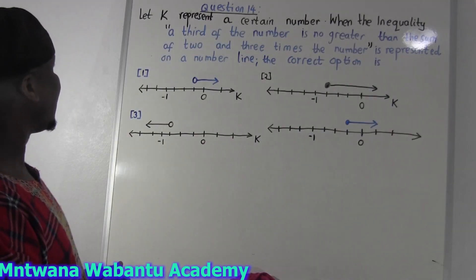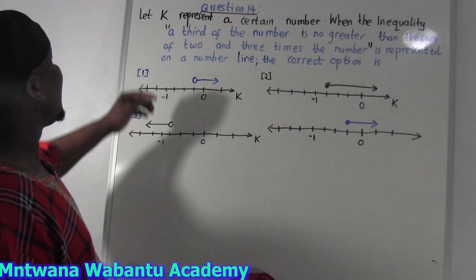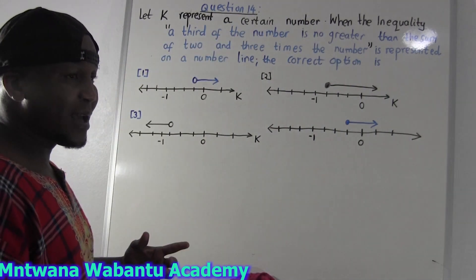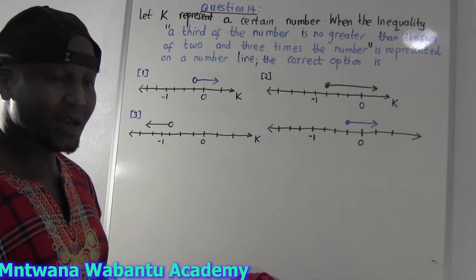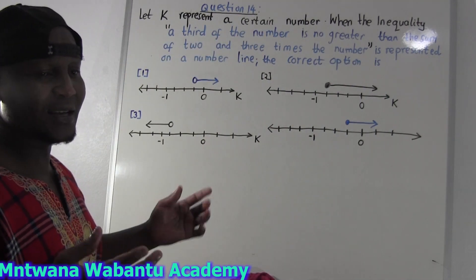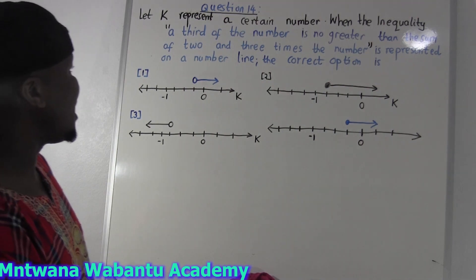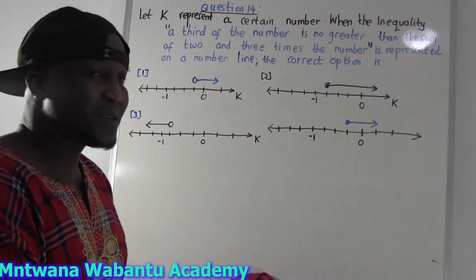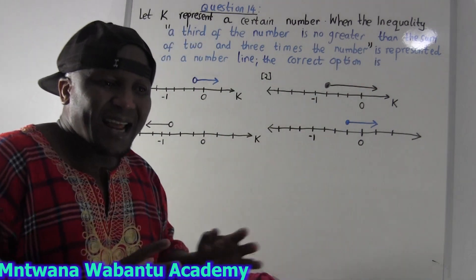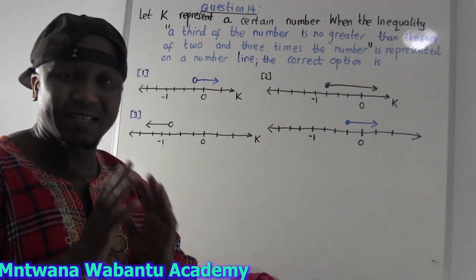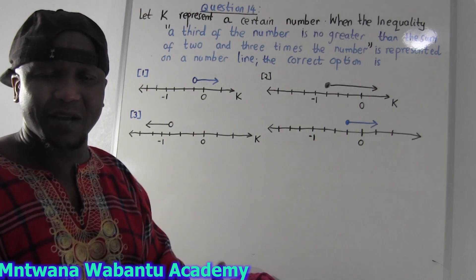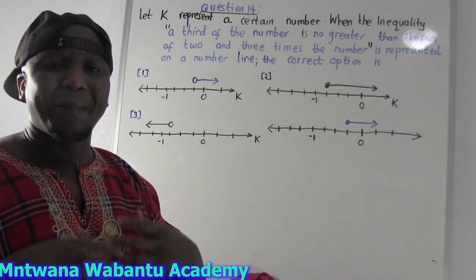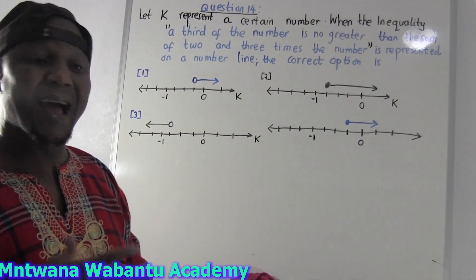We have a question here. Let's say K represents a certain number — K can be any number, it can be 5, 6, 7, any number. So let's talk about inequality. Equality means something equal, but inequality means not equal.